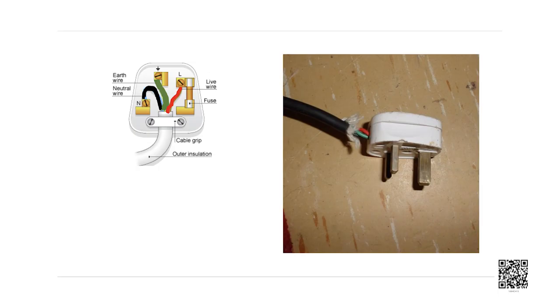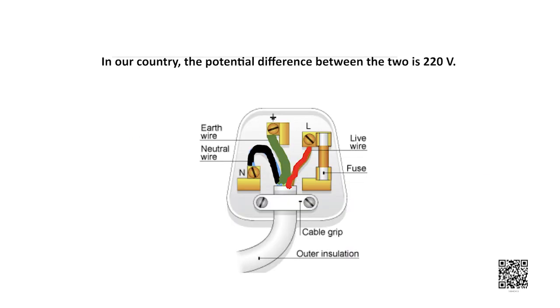Children, in our homes we receive the supply of electric power through the main supply which is generally called mains through overhead electric poles. One of the wires in the supply, usually with a red insulation cover, is called live wire, that is the positive. Another wire with black insulation is called the neutral wire or the negative. In our country, the potential difference between the live and the neutral wire is 220 volts.